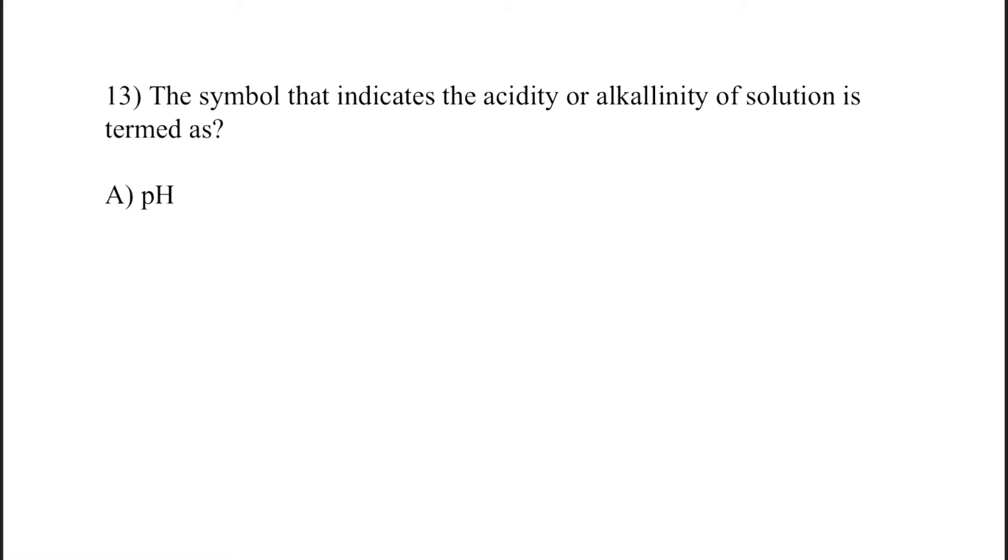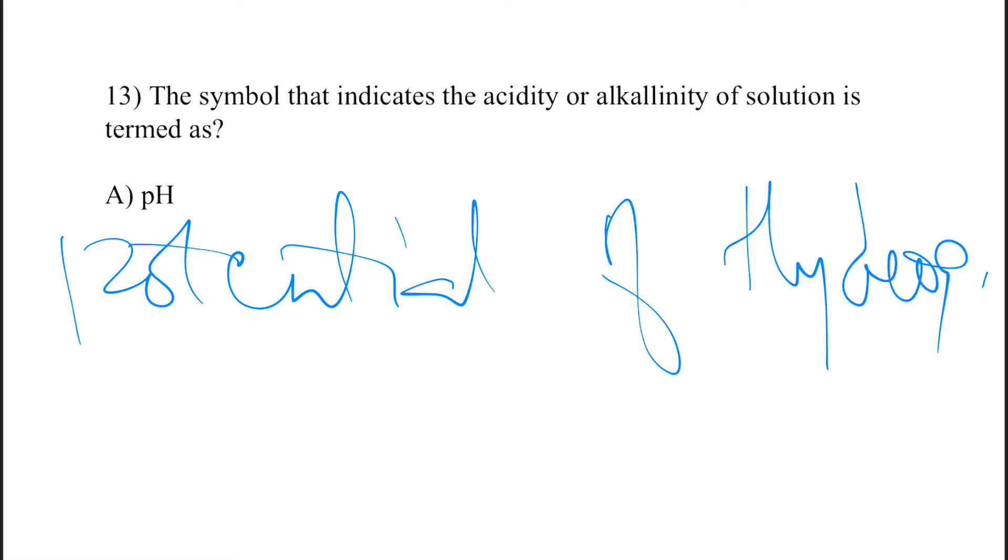Next question: The symbol that indicates the acidity or alkalinity of the solution is termed as? Answer: pH. pH stands for potential of hydrogen and describes the concentration of hydrogen ion in a solution.